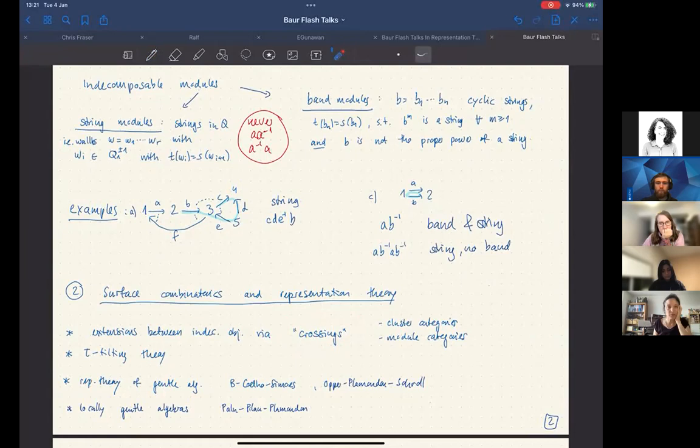Then you can use surface combinatorics in tilting theory, tau tilting theory, and representation theory of gentle algebras has been described in joint work with Coelho-Morris, and also Oppermann-Plamondon-Schroll, where you go to the derived category.